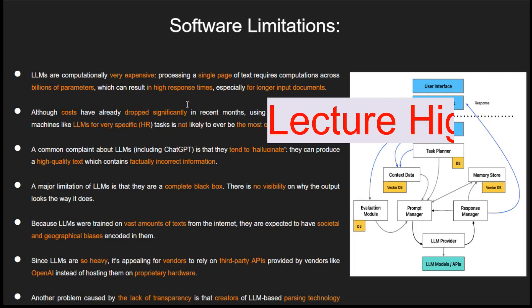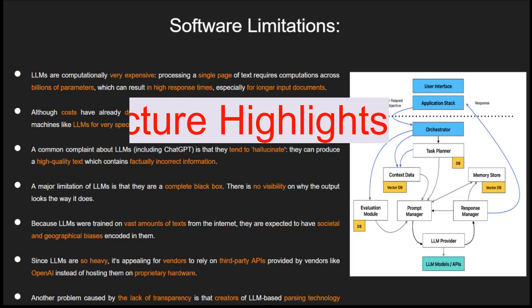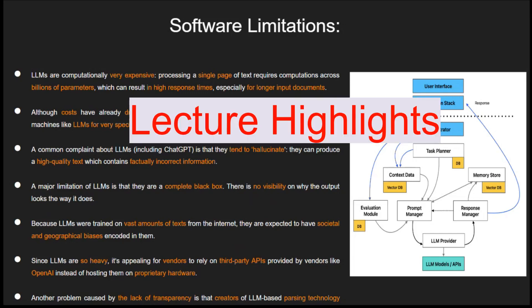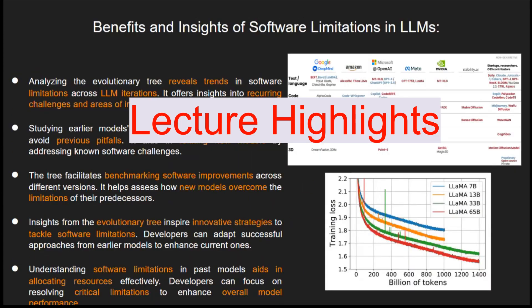Large language models are like a black box with no clear window into how and why they try to gather these kinds of outputs and what they do. What about the biasness from their training data that might sneak in? Remember, they are so heavy that third-party APIs might be available. Knowing the limitations of other models can help us build better ones. By checking out these limitations, developers can dodge pitfalls and craft better variants. The insights from the limitations can be like a roadmap.